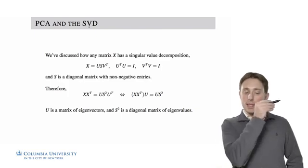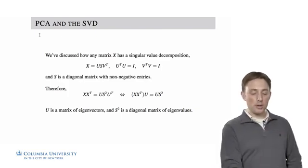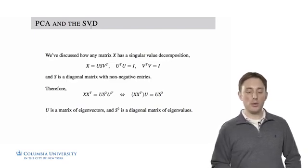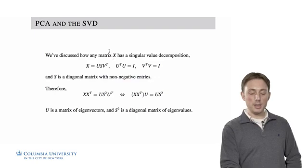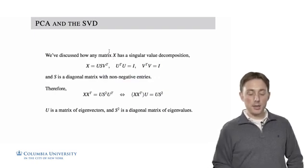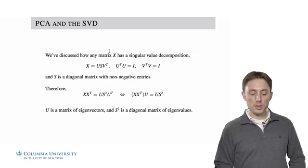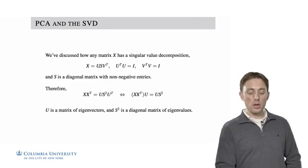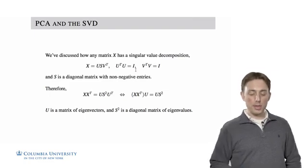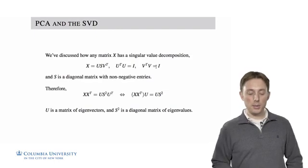I want to recall what we discussed previously, the connection between principal component analysis and the singular value decomposition. We've already discussed how a data matrix X automatically has a singular value decomposition. So we can write any matrix X as a product of a matrix U, S, and V transpose, where U transpose U is the identity matrix, and V transpose V is the identity matrix.